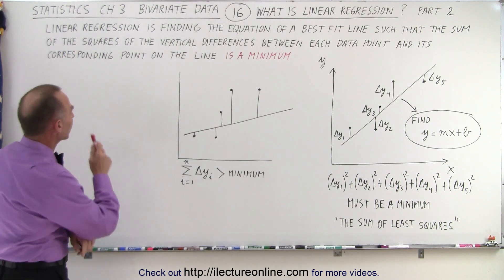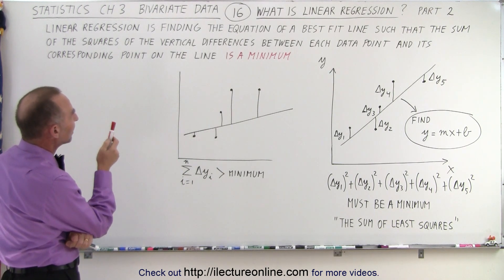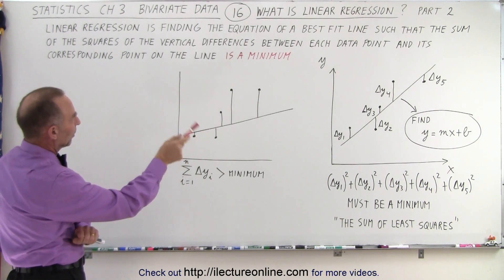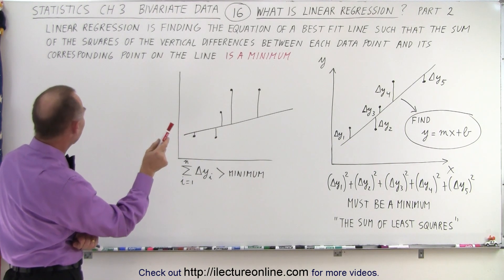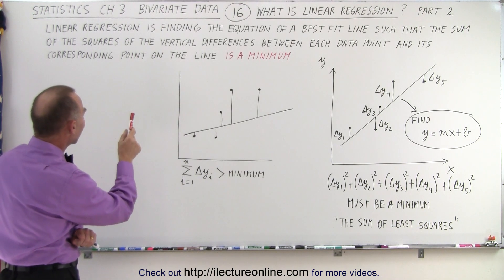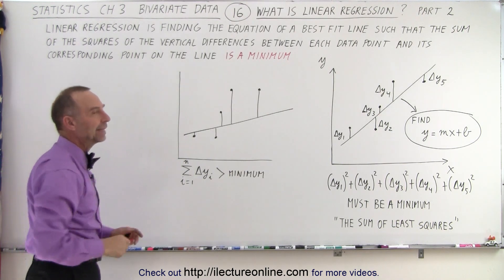So let's read it again. Linear regression is finding the equation of a best fit line, such that the sum of the squares of the vertical differences between each data point and its corresponding point on the line is a minimum, and that's the key.